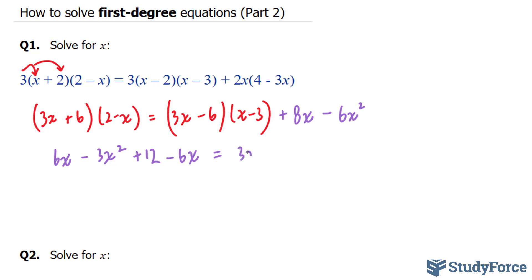That's on the left side. On the right side, we have 3x squared minus 9x minus 6x plus 18 plus 8x minus 6x squared. These two did not change. The next thing that I'll do is collect like terms.